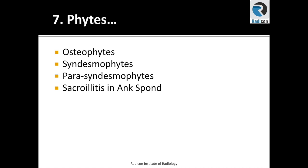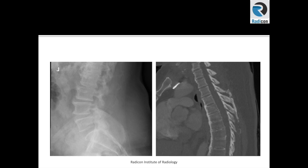Let's look at these two images. Both of these show abnormal corners of the vertebral bodies. There are bony overgrowths at the corners; however, these represent two distinct patterns of this abnormality.